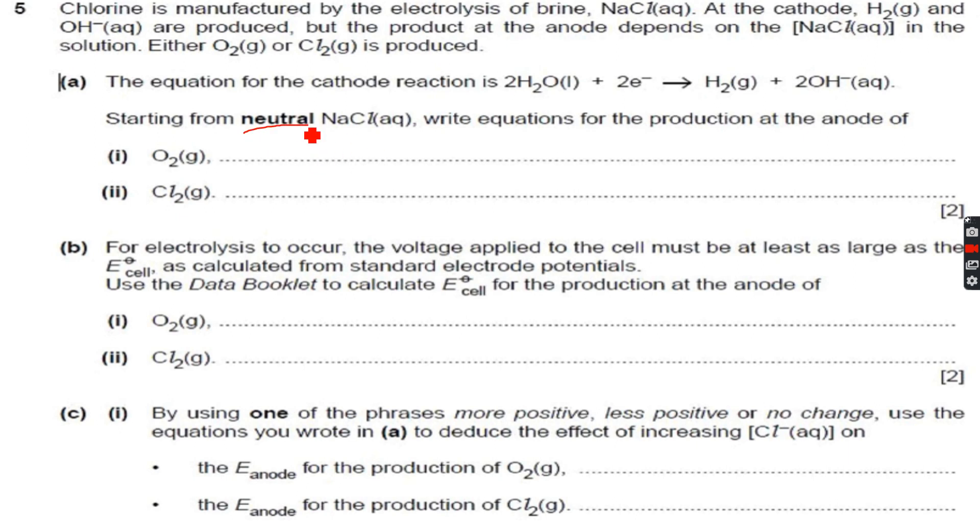Starting from neutral NaCl aqueous - by neutral they mean we cannot use OH negative for the oxygen half equation, we have to use H+. This is another trick: whenever they say neutral, they want you to use the H+ half equation and not the OH negative half equation of oxygen. Write equations for the production at the anode of O2 gas. It will be 2H2O in a reversible reaction.